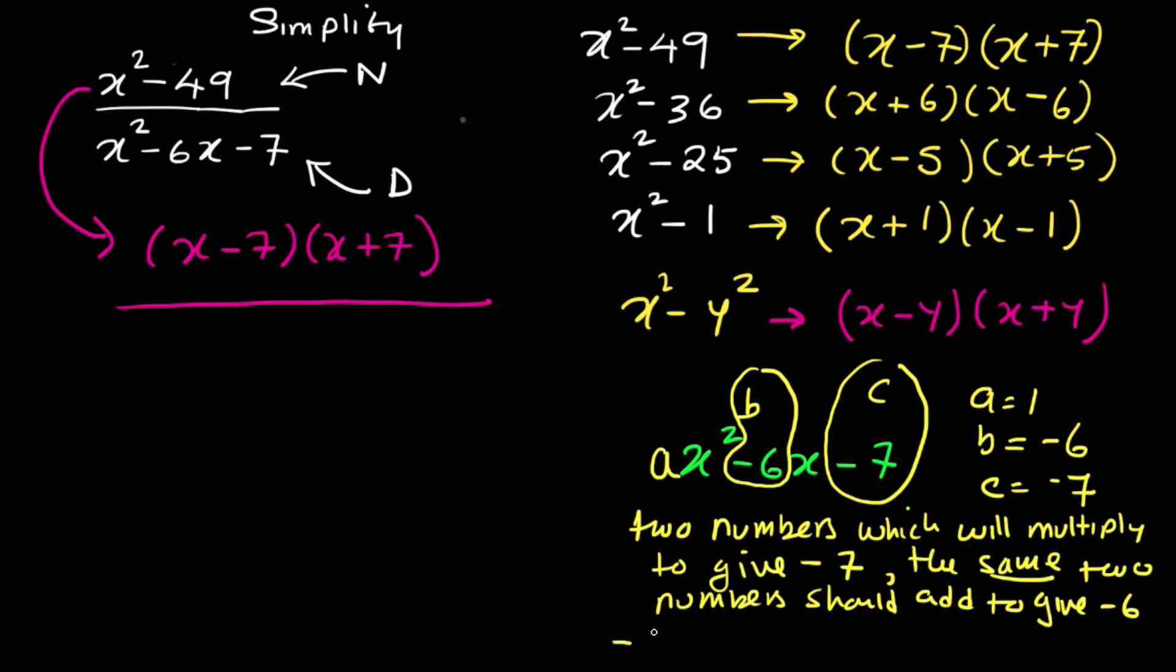So which are the two numbers? Find the product first. Is it minus 7 and 1 times 1? Does that give you minus 7? Yeah. And then minus 7 plus 1 gives you minus 6. Are we happy with this? Yeah. So those two conditions are met.